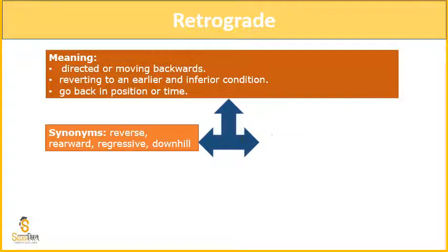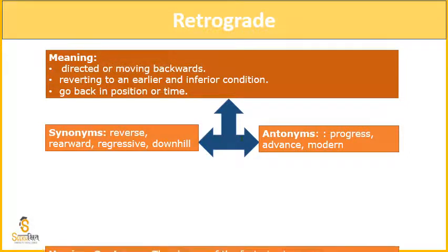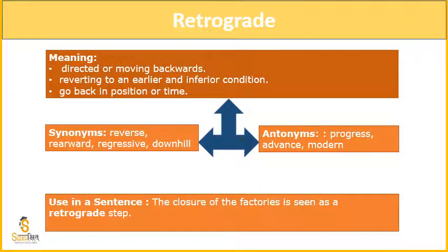So let us see the synonyms: reverse, rearward, regressive, downward. Antonyms aayega: progress, advance, modern. Use in sentence: 'The closure of the factory is seen as a retrograde step.' Like right now we are going through a retrograde stage — because of coronavirus, we have already gone 15 years back. So that is a very good way to remember this word — humari technologically way mein hum asal mein thodna 15 saal piche chale gaye, aur jitni aage progress honi thi utni nahi hogi, woh ruk gayi hai.